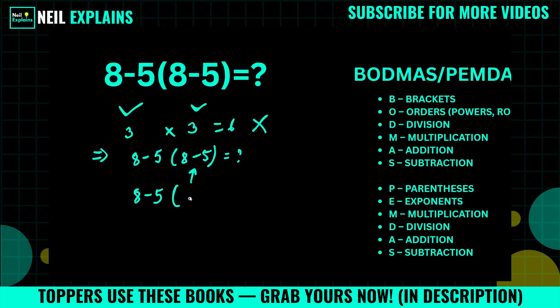8 minus 5, which will become 3. Next step: this bracket means they are in multiplication—8 minus 5 into 3. And 5 times 3, that is 15.